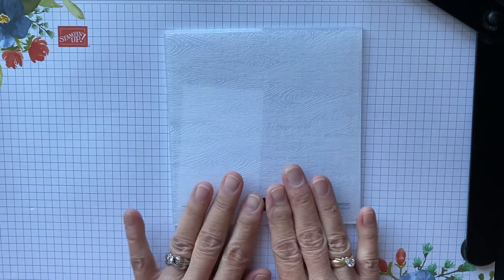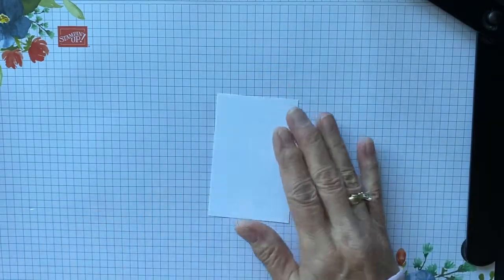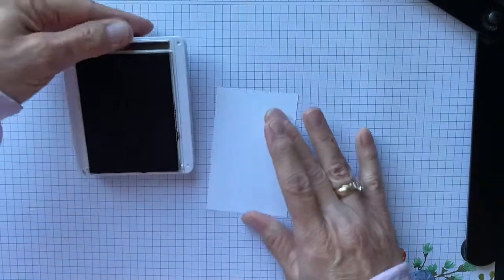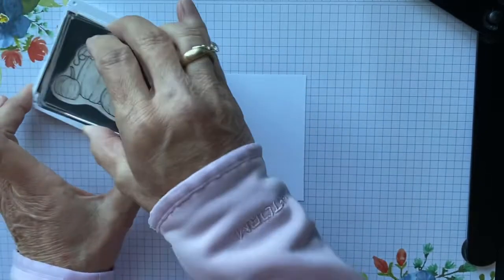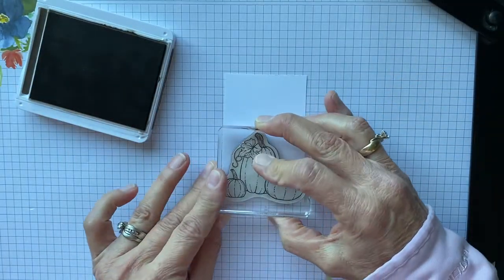So first we're going to do our stamping in our Early Espresso and we're going to stamp the cute little pumpkins. I love this set, it is so cute. So we're going to stamp this in the Early Espresso.